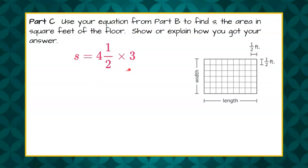So now we need to multiply four and a half by three. To multiply, we need to change this mixed number to an improper fraction. So two times four is eight, plus one is nine. So four and a half can be rewritten as nine halves. And three, written as a fraction, is three over one.